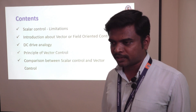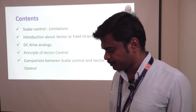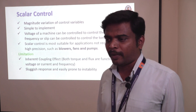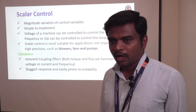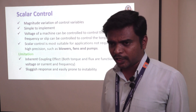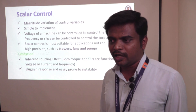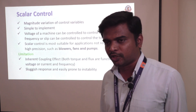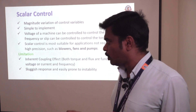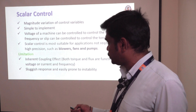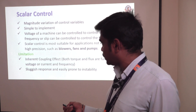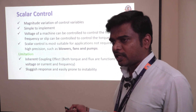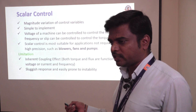Let's explore scalar control. In scalar control, only the magnitude of the control variable is varied to obtain variation in speed control. The main issue with scalar control is that if one parameter is varied, the other parameter will also get changed.